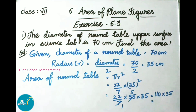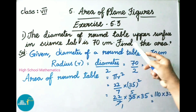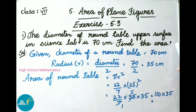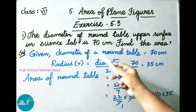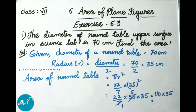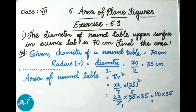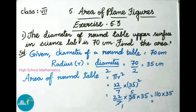See now question number 1. The diameter of the round table upper surface in the science lab is 70 cm. Find the area. Let us see the solution. In this question, they have given the diameter of a table and we have to find its area.